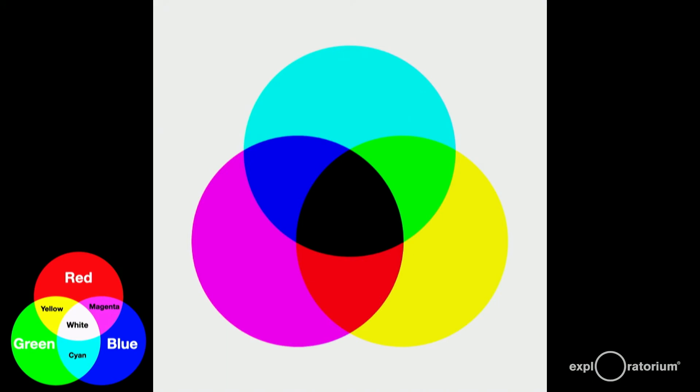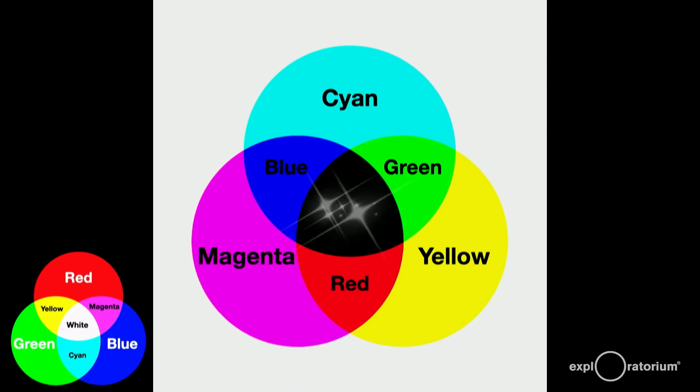I understand it's confusing at first, so let's review subtractive color mixing again. Our primary subtractive colors are cyan, magenta, and yellow. Mix magenta and yellow, and we get red. Mix cyan and yellow, and we get green. Cyan and magenta make blue. And all together, everything mixes to black. Like the RGB additive color mixing, you can add different amounts of cyan, magenta, and yellow to create any color. And again, complementary colors are opposite each other, like before.